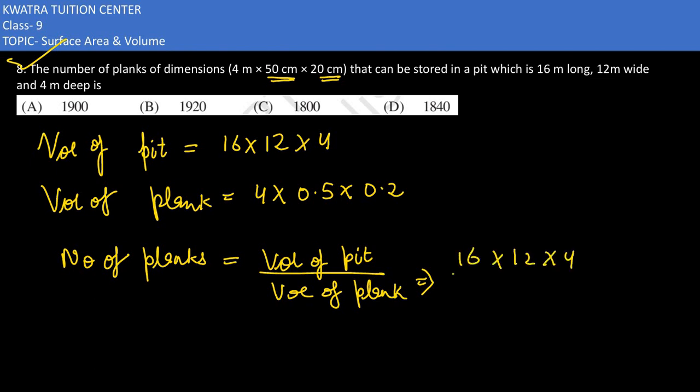So we have 16 times 12 times 4 for the pit volume, divided by 4 times 0.5 times 0.2 for the plank volume. Working through this calculation...